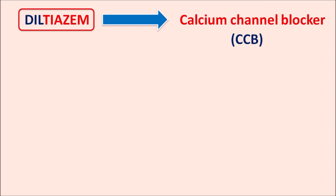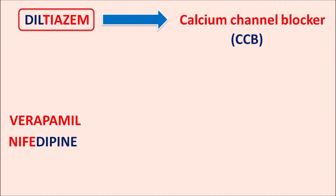We have few other drugs such as verapamil and nifedipine, which have the suffix -dipine. Similarly other drugs like amlodipine, felodipine — all these are the calcium channel blockers. Verapamil belongs to one chemical category, phenylalkyl amines, and the -dipines are chemically dihydropyridine derivatives.